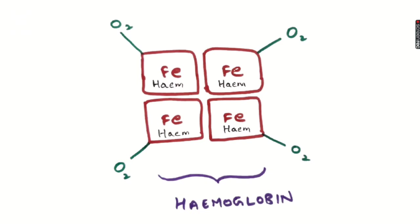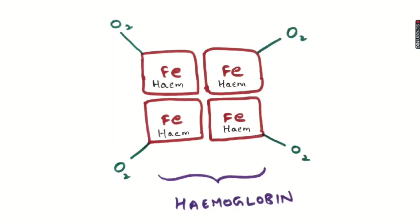As you can see, there is one heme group, a second, a third, and a fourth — four heme groups together constitute the hemoglobin structure. One iron atom can combine with only one oxygen atom. Since there are four heme groups and therefore four iron atoms, hemoglobin combines with four oxygen atoms total. This combined form is called oxyhemoglobin.